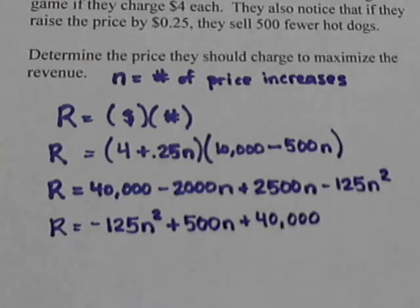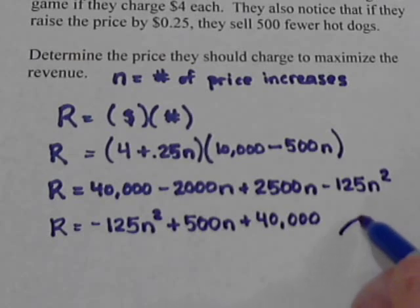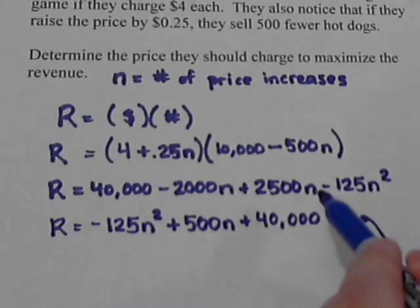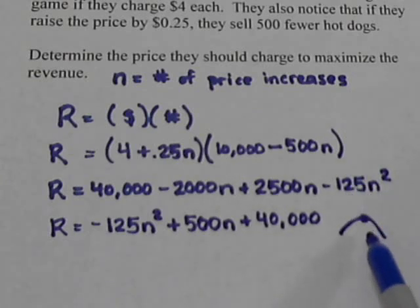So, we've got our formula for the revenue. And it's a polynomial, it's quadratic with the n squared. So, we know the rough shape is going to look like this. And we're trying to maximize the revenue, which means we need to find the highest point.